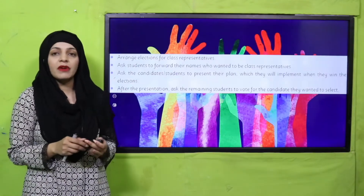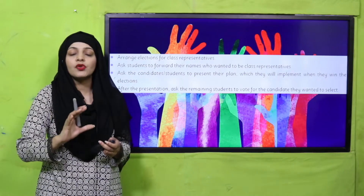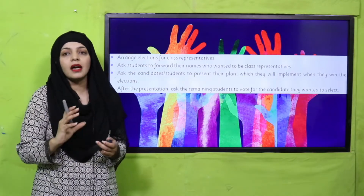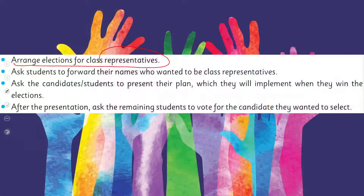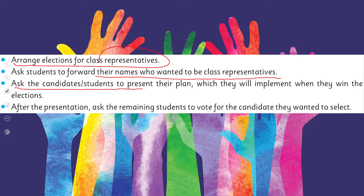Teachers, be very careful for this activity — follow the instructions and then conduct this activity in the class. Arrange elections for class representatives. Ask students to forward their names who want to be class representatives. Ask candidate students to present their plan which they will implement when they win the elections. After their presentation, ask remaining students to vote for the candidate they want to elect.